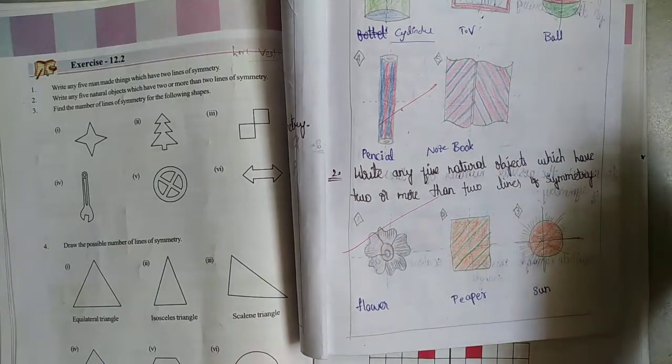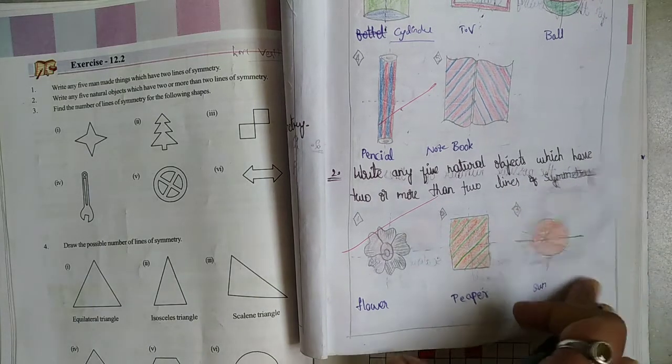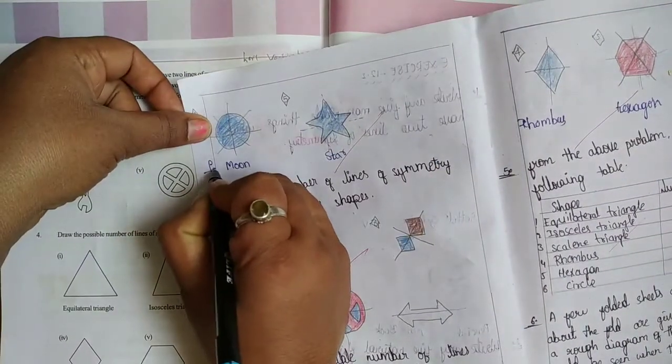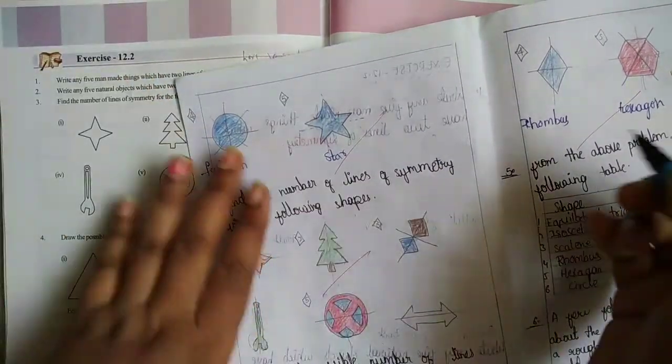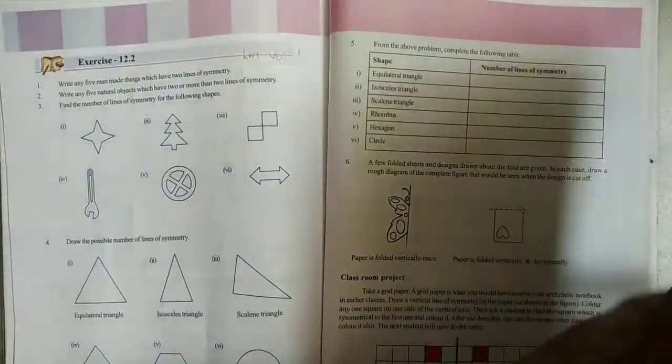Paper and Sun. For example, natural sun also has 2 or more line symmetry. Next, Moon, full Moon. Next, Star has 2 or more line symmetries.